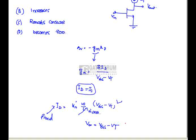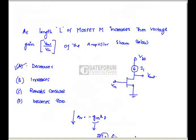So if overdrive voltage increases what about gm? Because in case of gm, id is constant, vgs minus vt increases means the gm decreases. If gm decreases what about the voltage gain? It also has to decrease. So option a is correct.